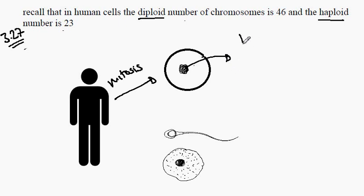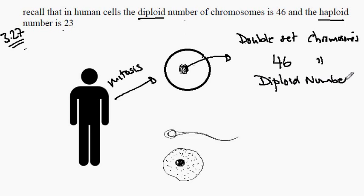nucleus that contains a double set of chromosomes. That is, they contain 46 chromosomes. This is known as the diploid number. The diploid number for humans is 46.